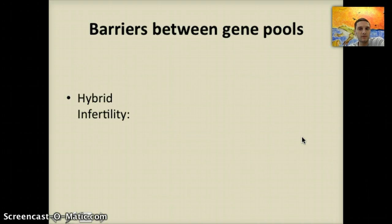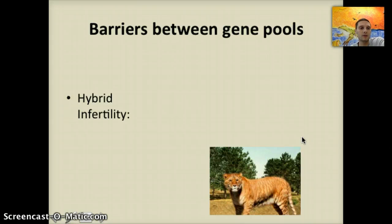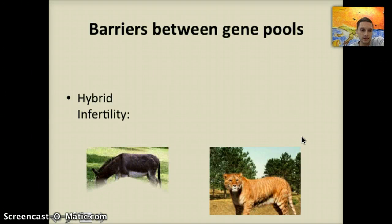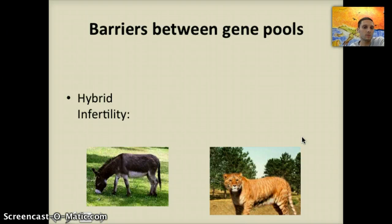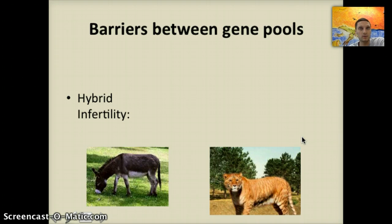A second type of barrier is called hybrid infertility, seen in examples like ligers or mules. A hybrid is a cross between two different species that is a living organism but is not able to reproduce. A liger is a cross between a male lion and a female tiger — actually the largest cats on the planet — and they are not able to reproduce. Similarly, a mule, the cross between a horse and a donkey, is not able to reproduce. Both are living organisms, but even though they can be produced as living offspring, they cannot themselves reproduce.